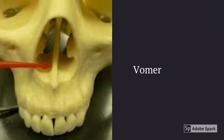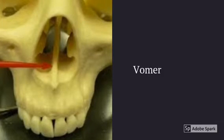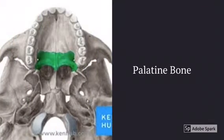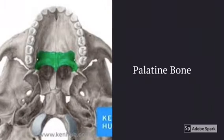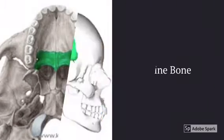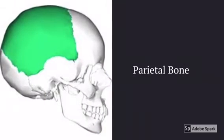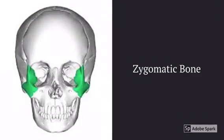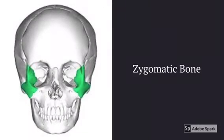This is the vomer, which is the bone in between the two nostrils. This is the palatine bone — in this picture we're looking at the roof of the mouth. This is the parietal bone.